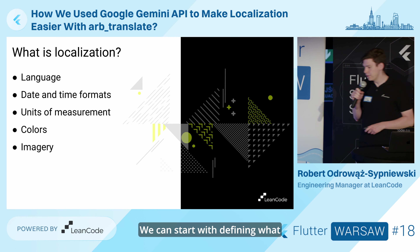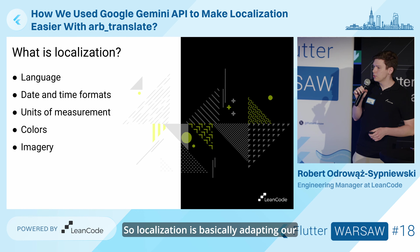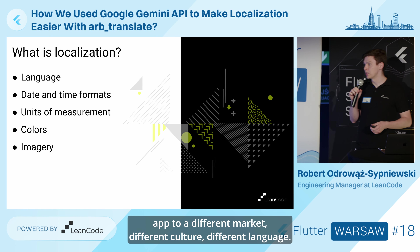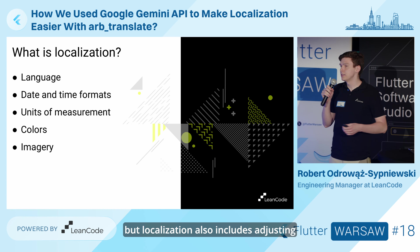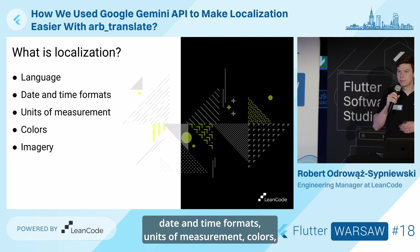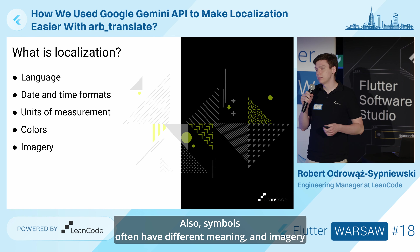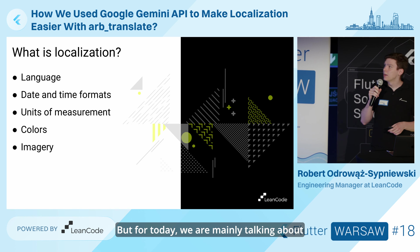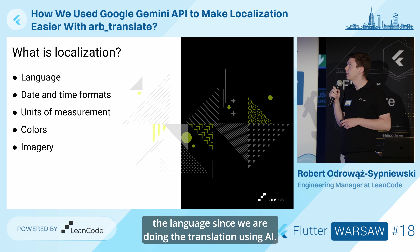We can start with defining what localization actually is, so we are on the same page. Localization is basically adapting our app to a different market, different culture, different language. Translation is probably the most important part, but localization also includes adjusting date and time formats, units of measurement, colors, because colors in different cultures can have different meanings. Also symbols and imagery can be offensive in different cultures. But for today, we are mainly talking about language, since we are doing translation using AI.